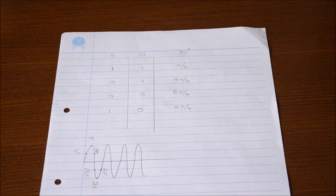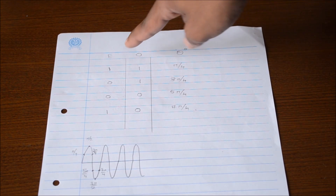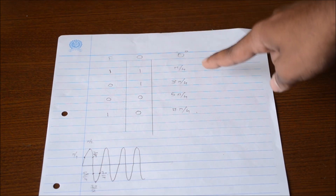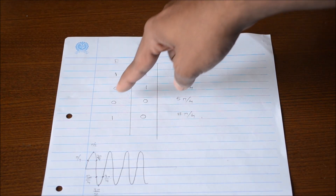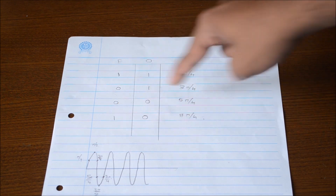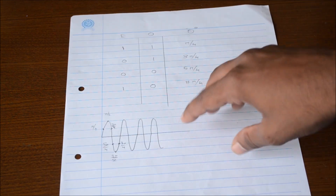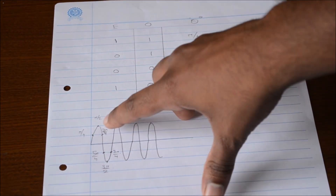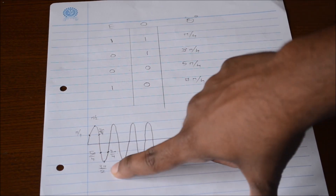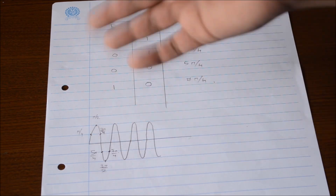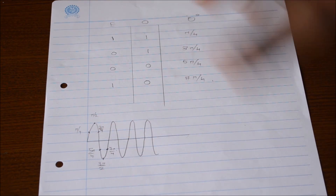Drawing a QPSK waveform on graph paper is tricky. Based on the even data and odd data, the phase at which the QPSK waveform starts is determined by a table: even=1, odd=1 → phase starts at π/4; even=0, odd=1 → 3π/4; even=0, odd=0 → 5π/4; even=1, odd=0 → 7π/4. A reference waveform shows 0°, π/4, π/2, 3π/4, 5π/4, 3π/2, and 7π/4.